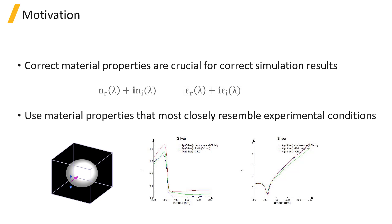In order to obtain results that match well with experimental measurements, it's always a good idea to use material properties that most closely resemble the experimental conditions. For example, when calculating the scattering cross-section of a silver Mie sphere, the result can be very dependent on material properties. You can see that for silver, the refractive index is actually quite different depending on which reference you choose, which is why it's always a good idea to use data that most closely matches your experimental conditions.